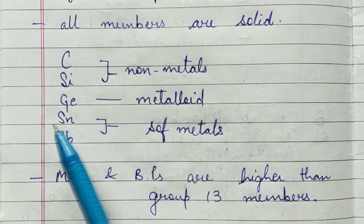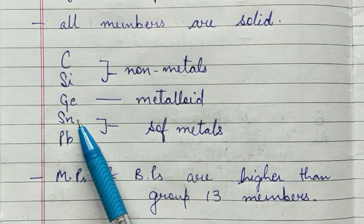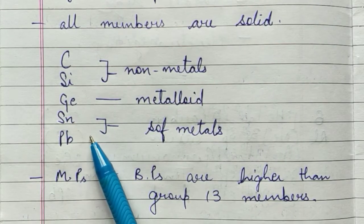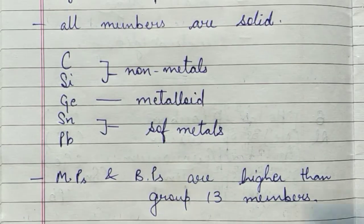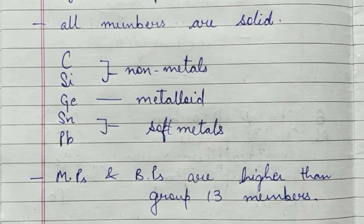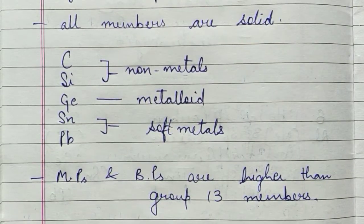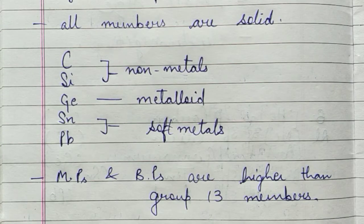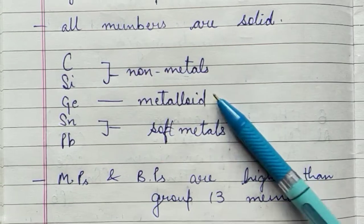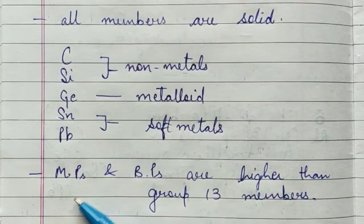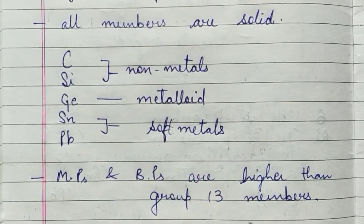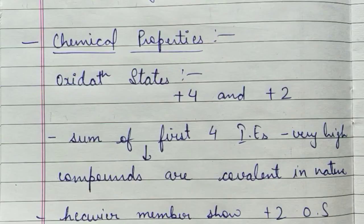Tin and lead are very soft metals. The melting and boiling points of group 14 members are very high as compared to group 13 members.